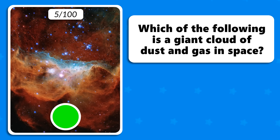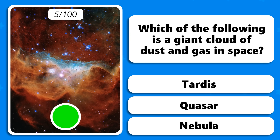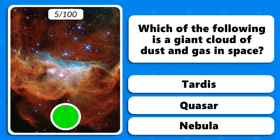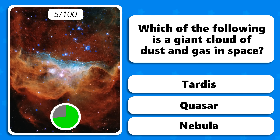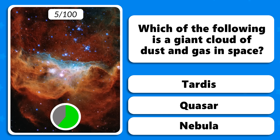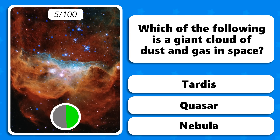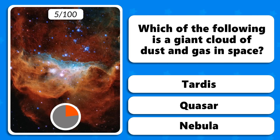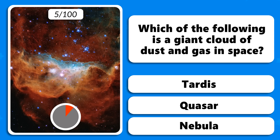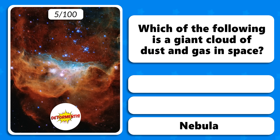Which of the following is a giant cloud of dust and gas in space? A TARDIS, a quasar or a nebula? The answer is nebula.